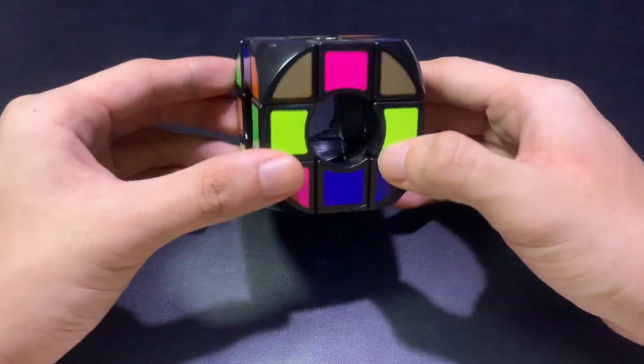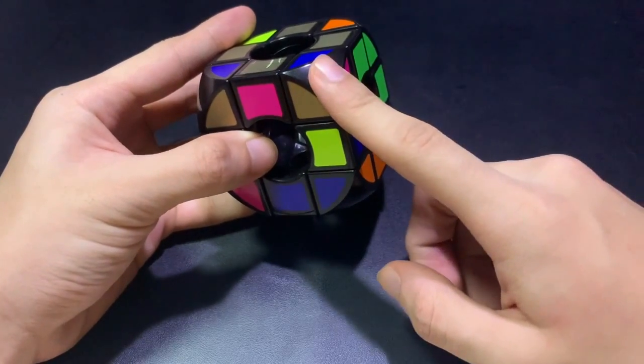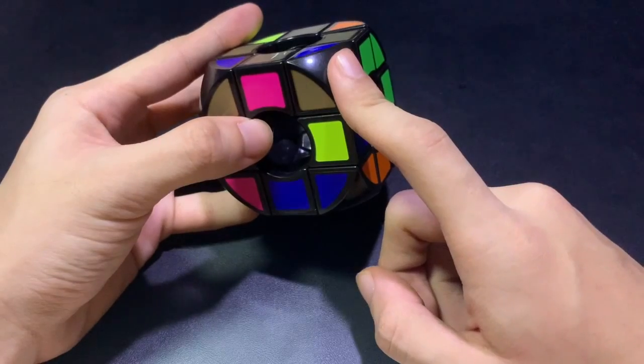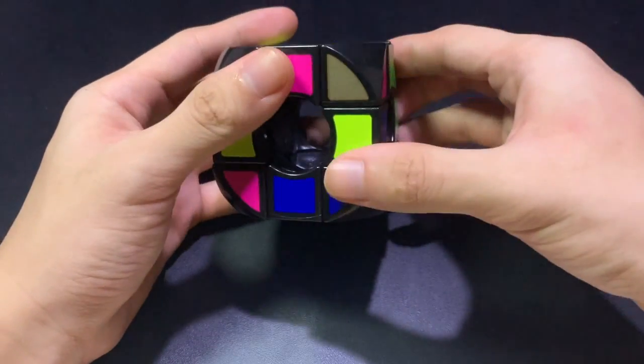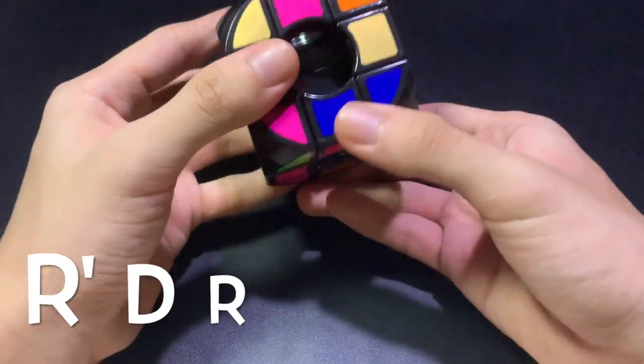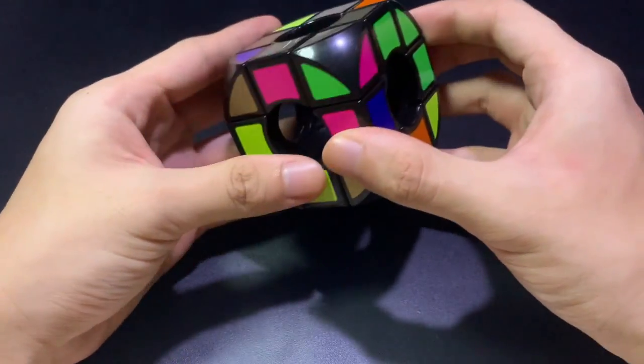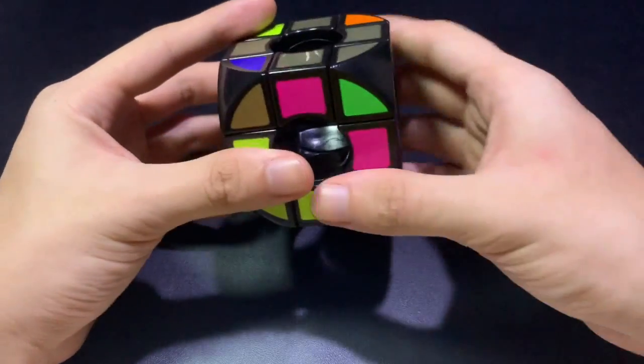So now that we got the colors set up, let's check if they are correct. So to check, you need to place at least one piece in its place. So here, we need to put the gold pink green in its place. So it's here. So we can do r prime, d, and r. So as you can see, it's the opposite. So how do we fix this?